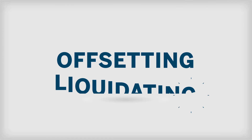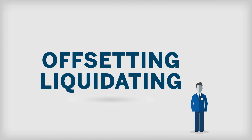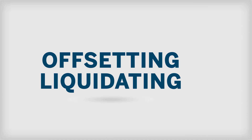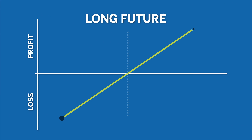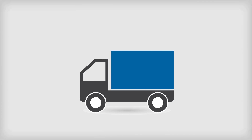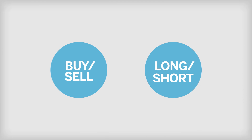Offsetting or liquidating a position is the simplest and most common method of exiting a trade. When offsetting a position, a trader is able to realize all profits or losses associated with that position without taking physical or cash delivery on the asset. To offset a position, a trader must make an opposite and equal transaction to offset the trade.